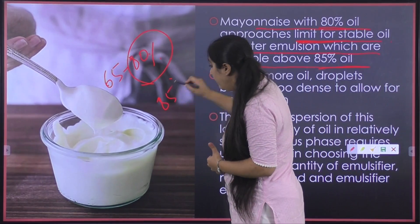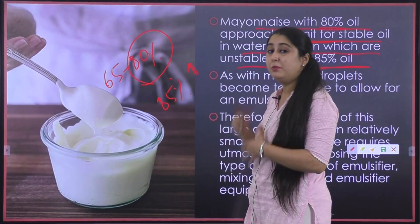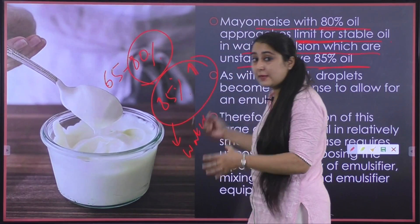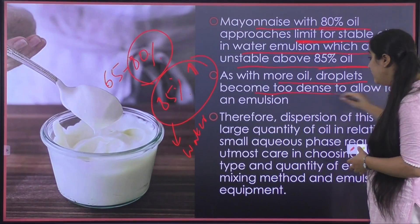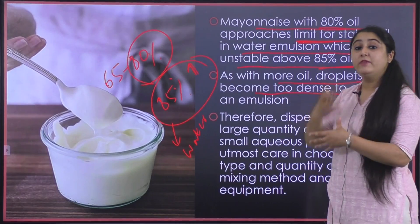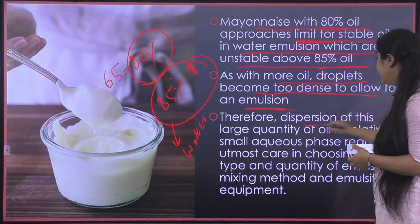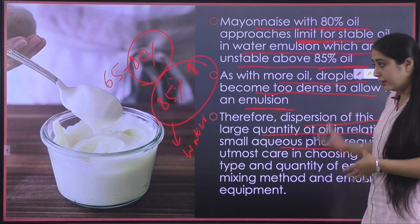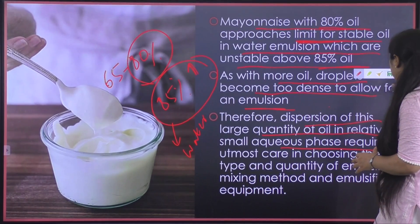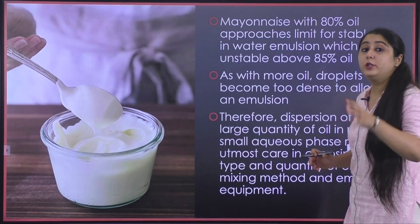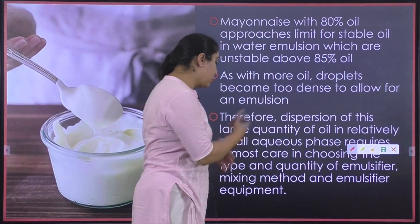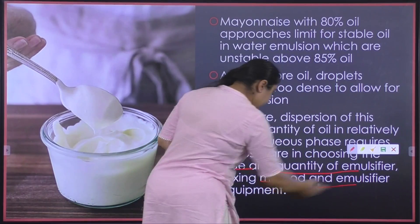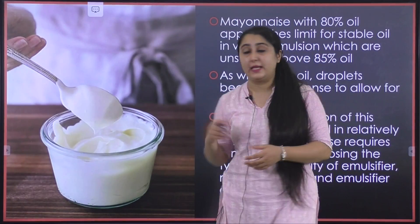If we use even more quantity of oil, say 85 percent or higher, it will become unstable because it is very difficult to dissolve this high amount of oil in a very small amount of water. The oil droplets will become too dense and heavy, so dispersion of this large quantity of oil in a relatively small aqueous phase needs very careful attention. We need to choose the type and quantity of emulsifier, the method, and the equipment wisely.